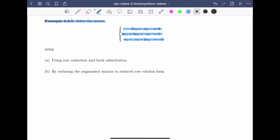So here we have a linear system of three equations, each in three variables. I'm going to ask us to solve this in two different ways. First, we're going to use row reduction to get to row echelon form and then use back substitution. We can also solve this by reducing all the way to reduced row echelon form, and then we'll see the solution straight away.